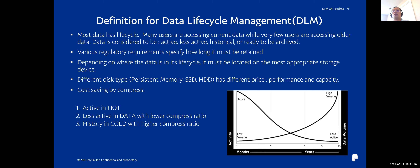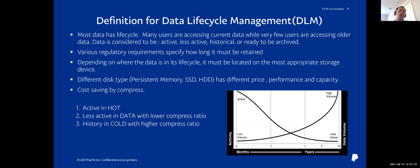If the data is active, we should place the data into the highest price, highest performance storage. If the data is less active, or historic data, we can place it into cheaper storage. When we move the data between storage tiers — for example, moving data from SSD to cheaper HDD — we can also apply compression with different compression ratios based on the data access pattern.